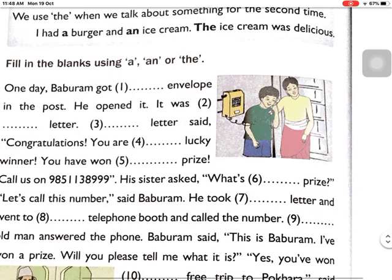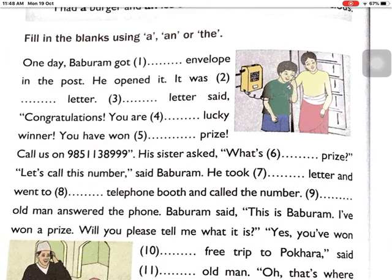Now let us fill in the blanks correctly using A, AN, or THE. Number one: 'One day Bab Graham got ___ envelope in the post.' The word starts with the vowel letter E, so we use AN — 'an envelope.' He opened it. Number two: 'It was ___ letter.' Letter is introduced for the first time here, so it is 'a letter.'